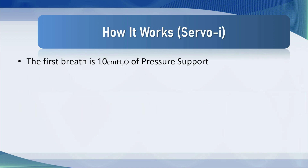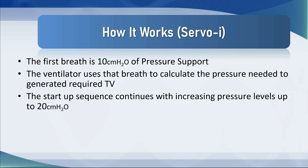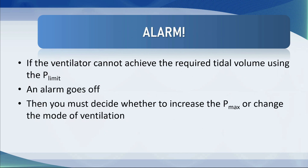On the Servo, the first breath is 10 centimeters of water of pressure support. The ventilator then uses that breath to calculate the pressure needed to generate the required tidal volume, then starts a startup sequence gradually increasing the pressure levels up to 20 centimeters of water, and then gives the patient the pressure support level it thinks it needs. Subsequently the ventilator may make changes from breath to breath, but it limits those changes to a maximum of plus or minus three centimeters of water — it doesn't give 20 centimeters in one breath and five in the next. If the ventilator cannot achieve the required tidal volume using the pressure limit, an alarm goes on and you need to decide whether to increase the Pmax or change the mode of ventilation.